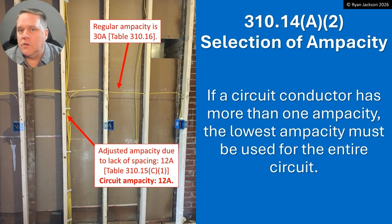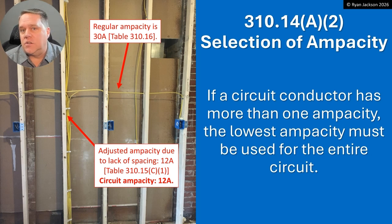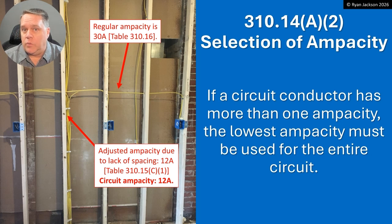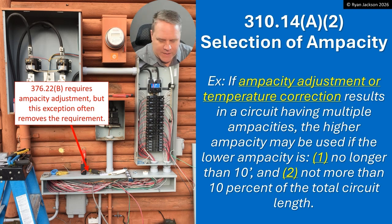You can't just look at a piece of 12-gauge THHN and say 'that's a 20-amp wire' or 'a 30-amp wire.' You have to know the conditions of use. Are you installing this on a roof in Phoenix, or are you installing it in a cellar in Alaska? Those are two different conditions of use. Are you putting it in a conduit with one other wire or a hundred other wires? Two different conditions of use — and both will change the ampacity.